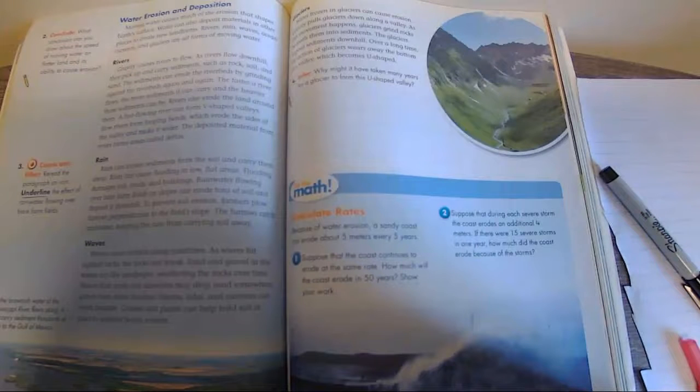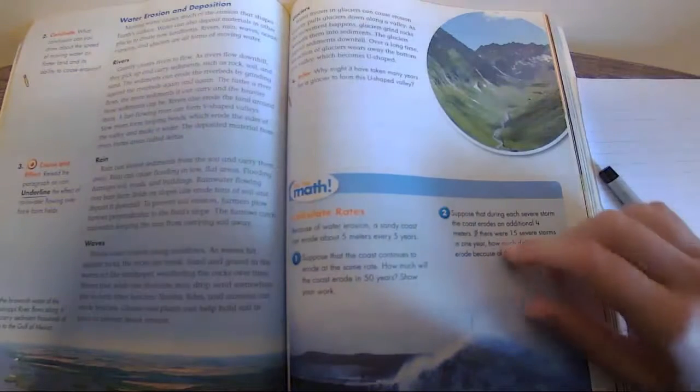Over a long time, the action of glaciers can wear away the bottom of a valley which becomes u-shaped.